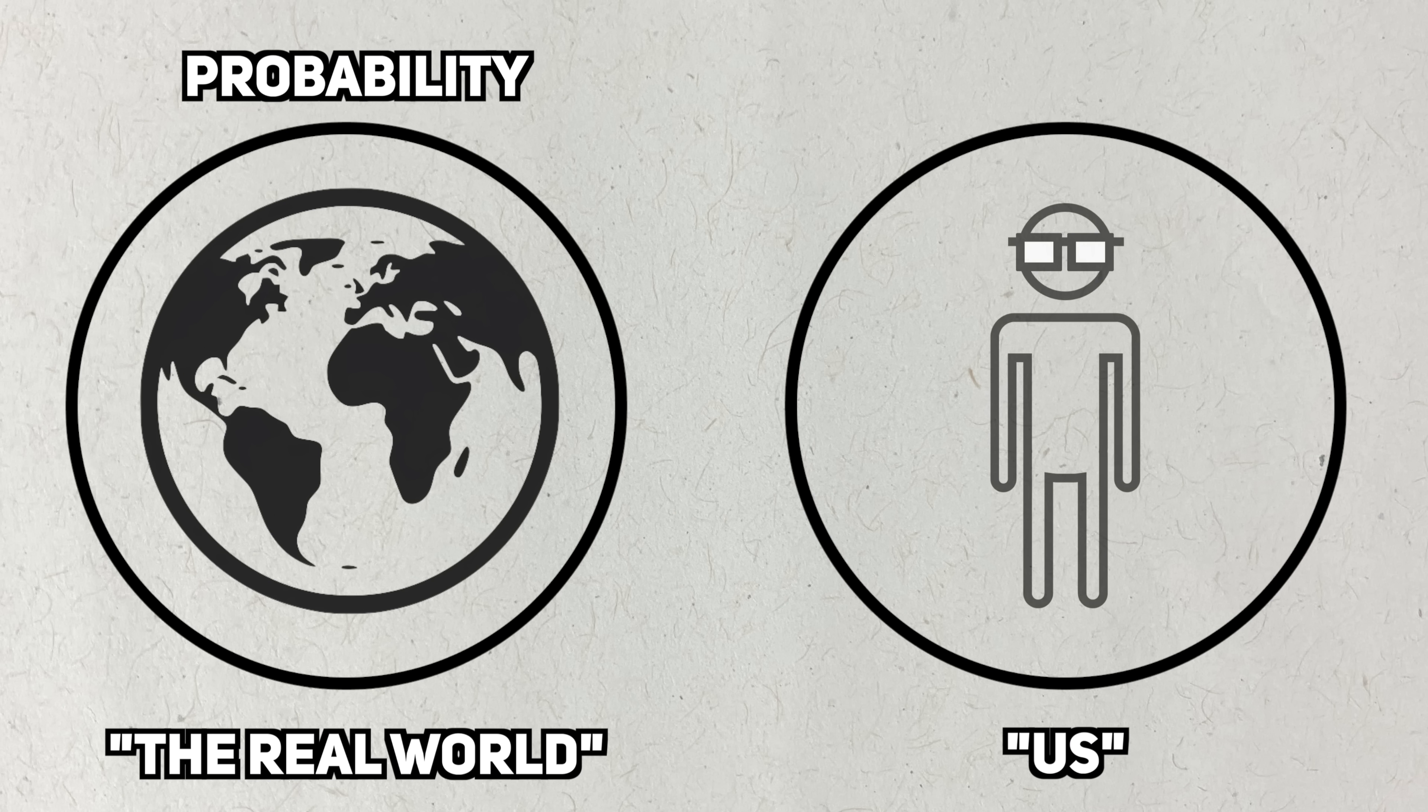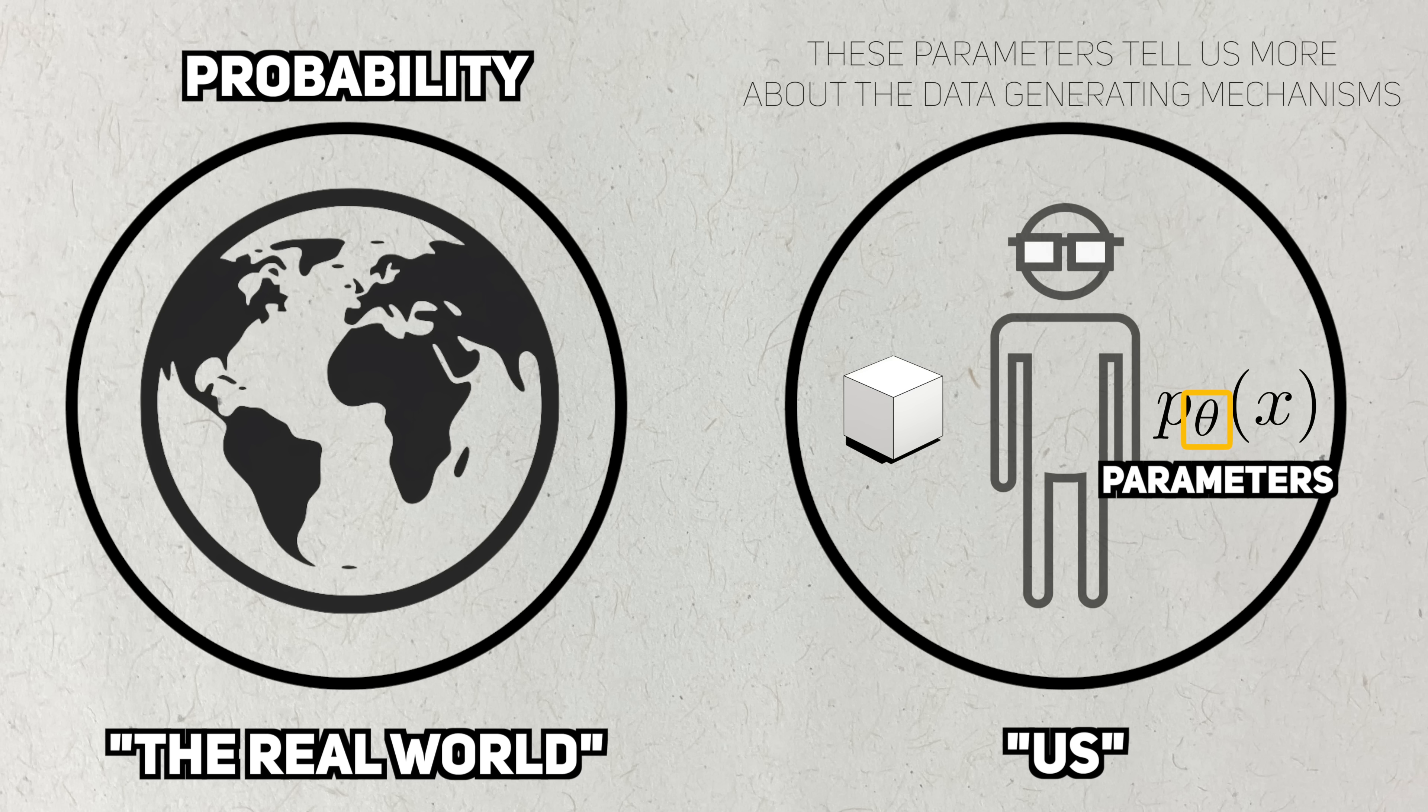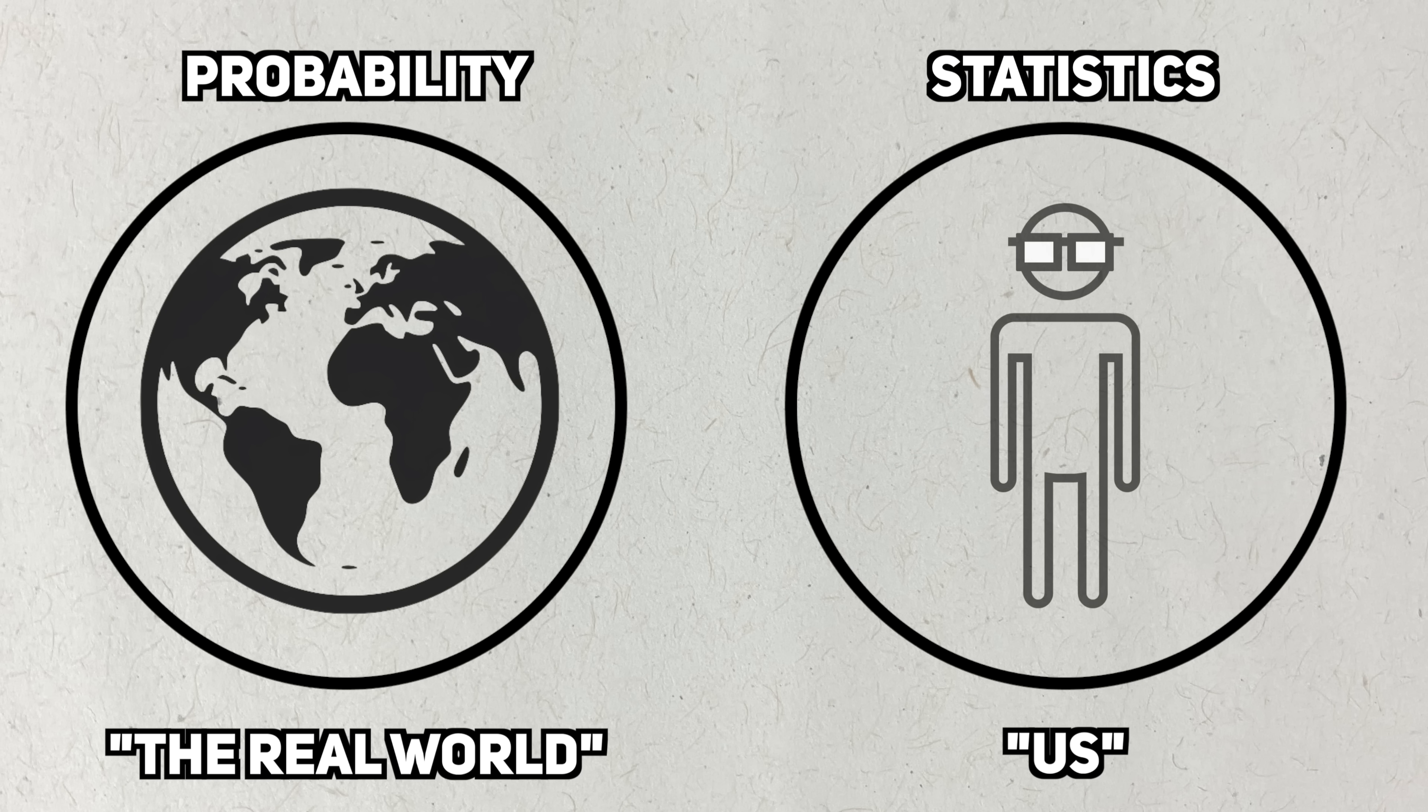The data is random, but we assume that this randomness has predictable structure to it. Therefore, you can think of the world as being ruled by the laws and objects of probability. On the other hand, there's us, who observe the data. We take the data we observe and approximate the unknown probability distribution with a statistical model. While estimating generic functions is really hard, we often further approximate the true distribution with a parametric family. This simplifies the problem of estimating a single function to estimating a single or few numbers called parameters.